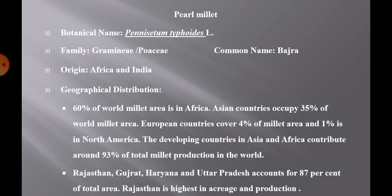Regarding geographical distribution, area and production of pearl millet in the world is combined with other millet crops like finger millet, foxtail millet, etc., so data is not available for pearl millet as a sole crop. However, pearl millet accounts for almost half of global millet production, and 60% of the world millet area is in Africa. ASEAN countries occupy 35% of the world millet area, European countries cover 4%, and North America covers 1%. Developing countries in Asia and Africa contribute about 93% of total millet production, and Asia alone contributes 43%.